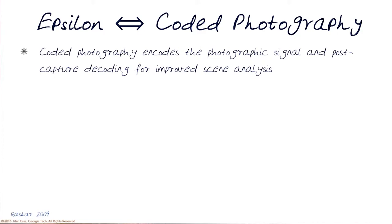Coded photography is basically aimed at that kind of process, where we encode into the image itself additional information that would allow us to extract more kinds of images out of it at a later point — something that could actually capture depth, parallax, even focal planes, and perhaps additional information.